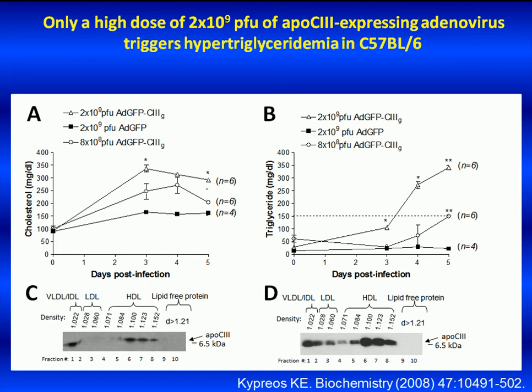As shown in this slide, infection with 2×10⁹ PFU of the ApoC3-expressing adenovirus resulted in severe hypertriglyceridemia and a significant increase in plasma cholesterol levels of the infected mice. This finding is consistent with previous results showing that ApoC3 overexpression in vivo causes an increase in plasma cholesterol levels. In contrast, infection of mice with the lower dose of 8×10⁸ PFU resulted in only a modest increase in plasma triglyceride levels, which remained within normal levels. This modest increase was accompanied by a modest increase in plasma cholesterol levels.